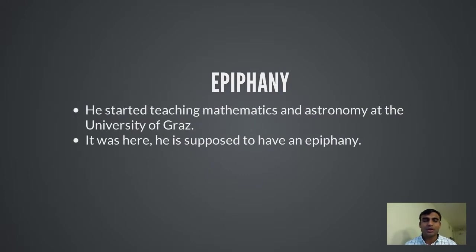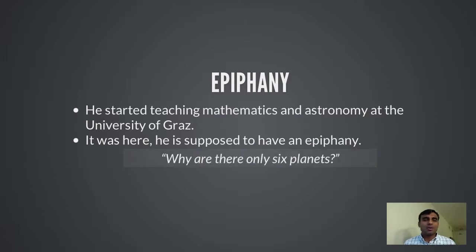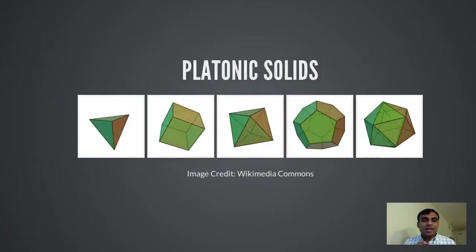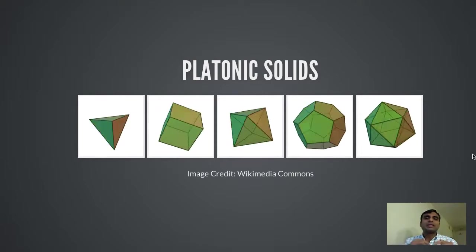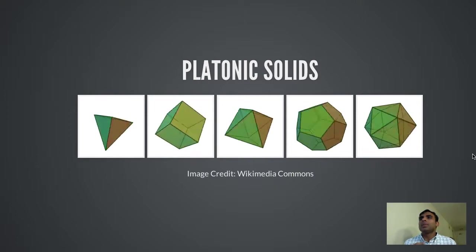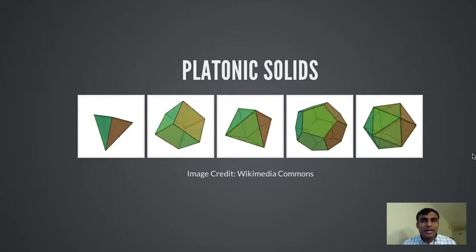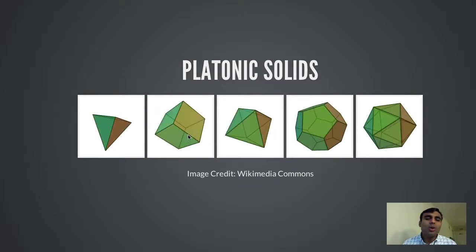When Kepler became a teacher at the University of Graz, he had a great epiphany: why are there only six planets? The answer, he thought, lay in platonic solids. A regular polygon is a polygon that has all sides equal, and a platonic solid can be thought of as a three-dimensional extension of a polygon — a solid whose all faces are regular polygons. For example, consider a cube: if all its faces look the same, it is a platonic solid.